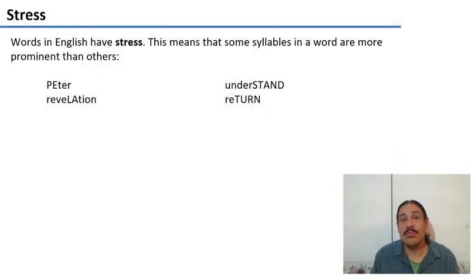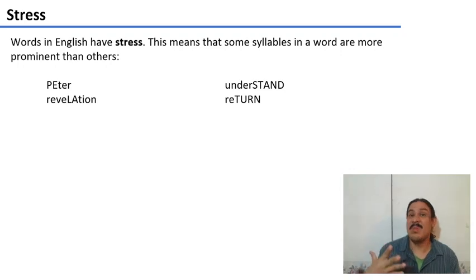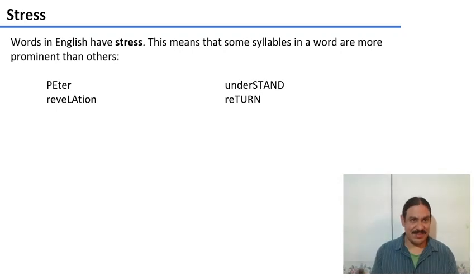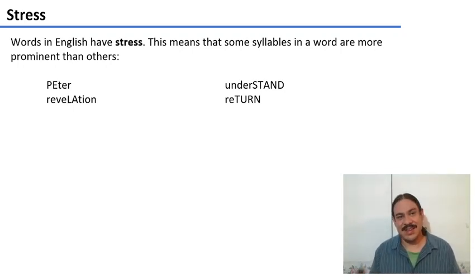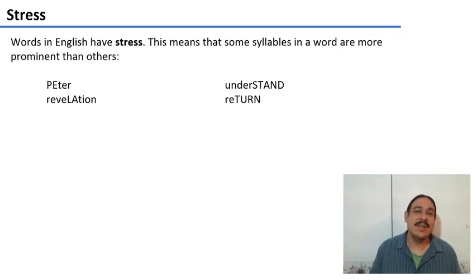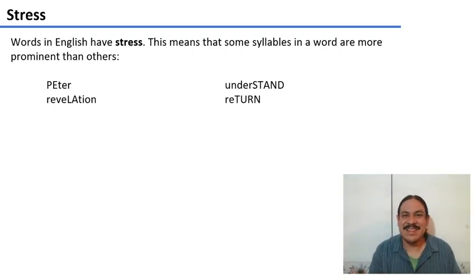We have words in English that have stress, meaning there's one syllable that is more prominent somehow. So we have words like 'Peter' and 'understand' and 'revelation' and 'return.' Notice how these words would sound wrong if we said 'Peter,' 'understand,' 'revelation,' 'return' — placing the stress on a different syllable makes it not sound like the actual word. It sounds strange.